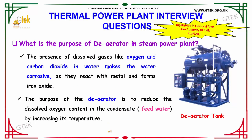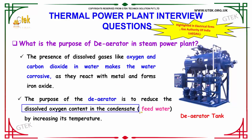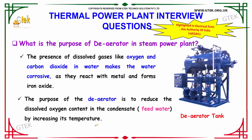What is the purpose of the de-aerator in a steam power plant? The presence of dissolved gases like oxygen and carbon dioxide in water makes the water corrosive, as they react with metal and form iron oxide. The purpose of the de-aerator is to reduce the dissolved oxygen content in the condensate, that is the feed water, thereby increasing its temperature.